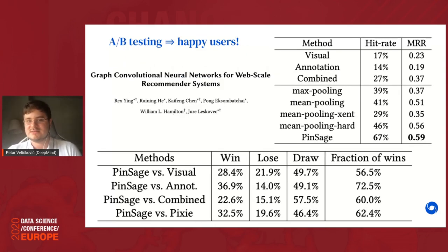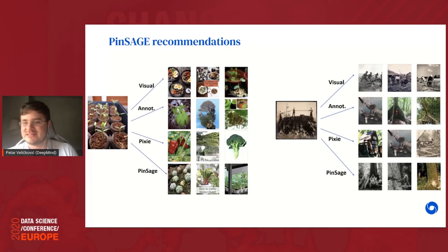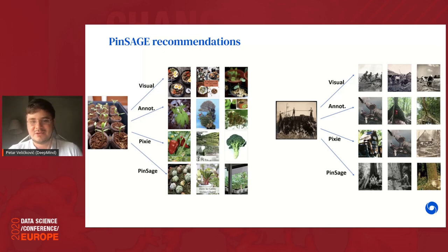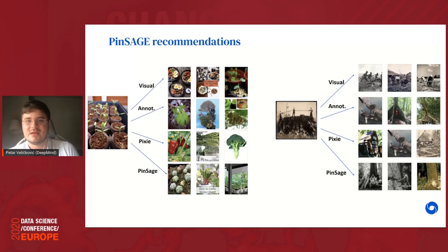With the model trained this way — published as 'Graph Convolutional Neural Networks for Web-Scale Recommender Systems' — A/B testing metrics showed significantly happier users and better recommendations than previous competitors. For example, given a picture of potted plants, a purely visual embedding recommends visually similar but irrelevant images like food, whereas the PinSage model recommends genuinely relevant and useful content.